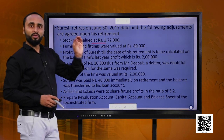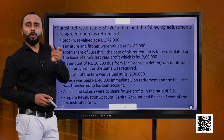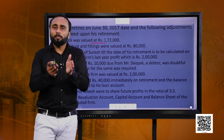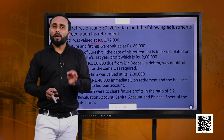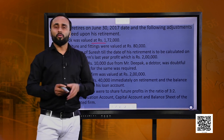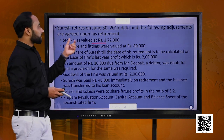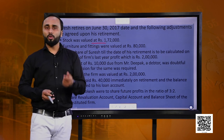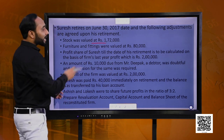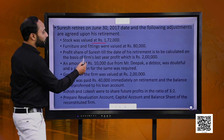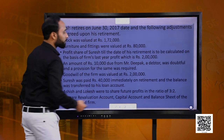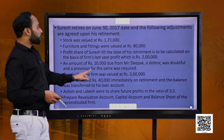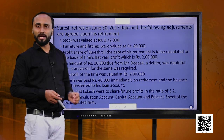The partner is getting retired in the middle of the year, so we have to calculate the partner's profit or loss for that particular period. The duration will be April, May and June — 3 months for which the partner was there in the partnership. We have to give him the profit share for those months, calculated on the basis of the firm's last year profit of 2 lakh. Also, an amount of 10,000 due from Mr. Deepak was doubtful and a provision for the same was required.